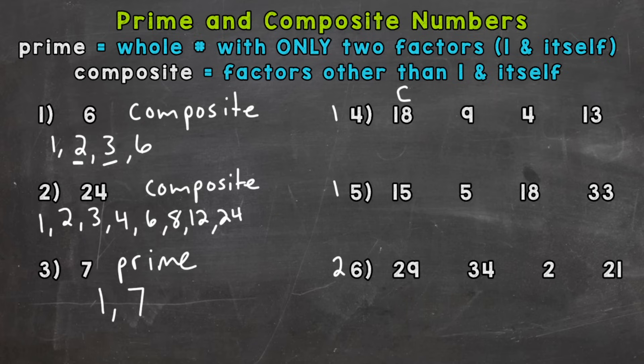Nine, well, one times nine is nine. And we can also do three times three. So we have three factors for nine. And that means it's composite because it's more than one and itself. Now, a common misconception when people start looking at prime and composite numbers for the first time is thinking that all evens are composite and then all odds are automatically prime, which isn't true. Odd numbers can be composite, just like this nine here.